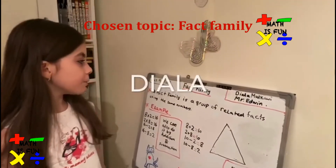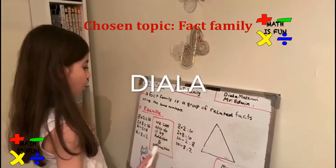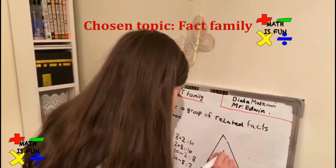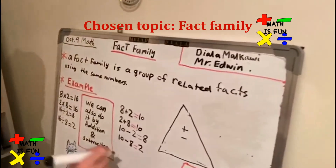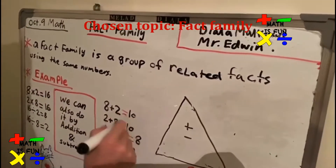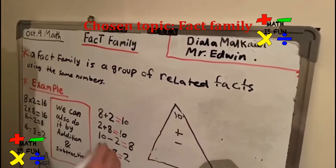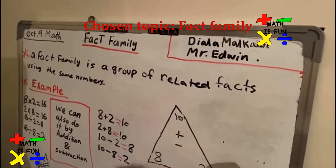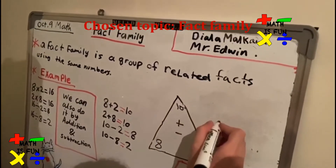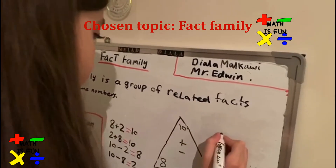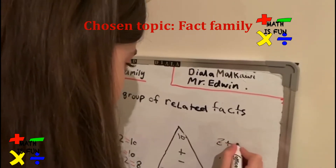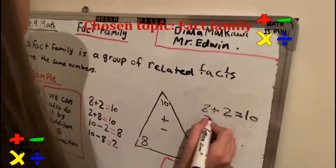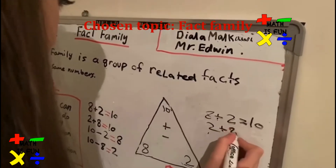Hello again. We will talk about fact family of addition and subtraction. Here we have the sum is 10, and the parts are 8 and 2. So here we have 8 plus 2 equals 10. Here we have 2 plus 8 equals 10.